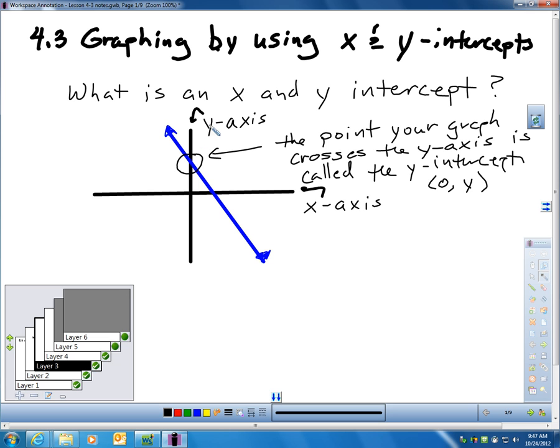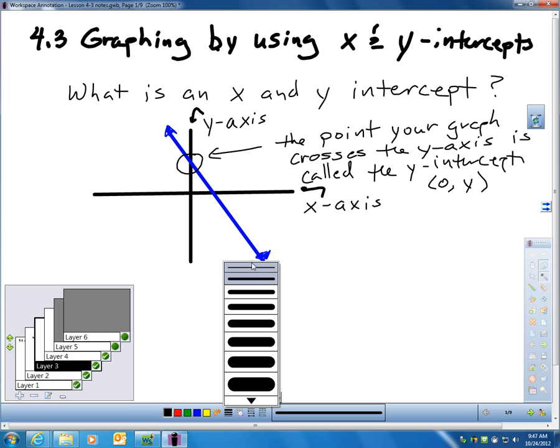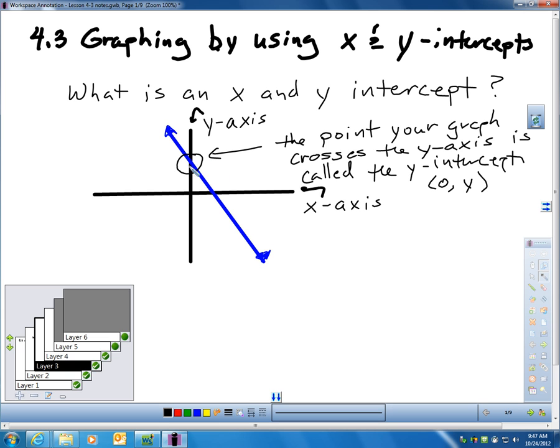The point where the line touches the Y axis, that's called the Y intercept. And I want you to think carefully about this point. Think about if I wanted to write an ordered pair for that point. I would not move left or right, and I would have to move up some amount. The ordered pair for that would be (0, y), because I did not move left or right.